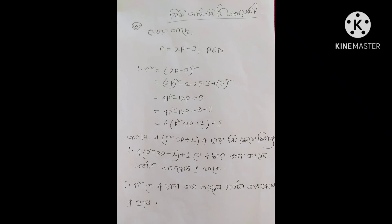2p minus 3n squared. So this is (a minus b) whole square. (a minus b) whole square equals 2p squared minus 2 times 2p times b minus 3, plus b squared minus 3 squared.